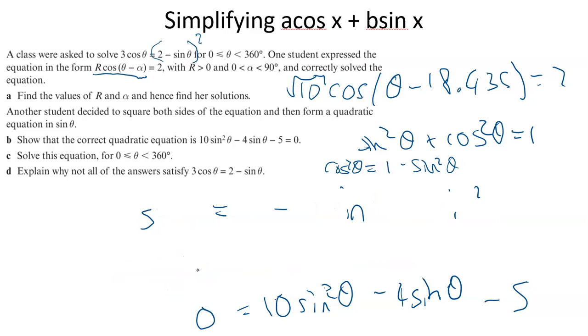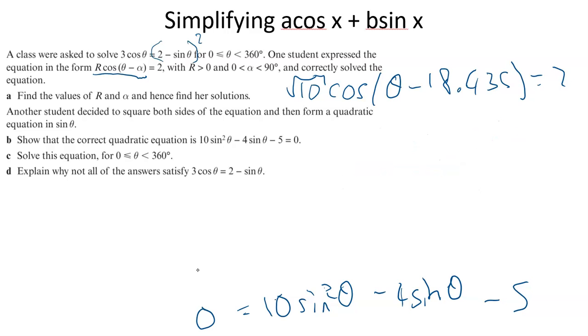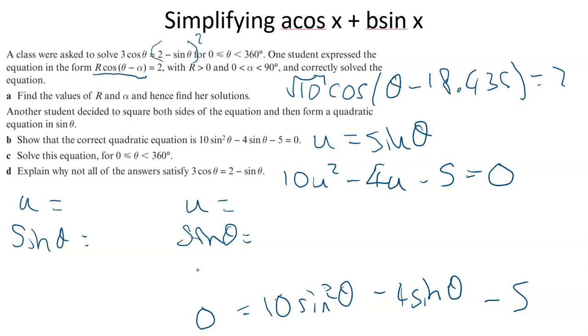Now we can solve this equation. I'll set this up but not do all the number work. Substitute u = sin(θ), then solve 10u² - 4u - 5 = 0. That might factorize or use the quadratic formula to get two values of u. Then sin(θ) equals each value, do inverse sine and use cast diagram. You'll get four answers total for θ - two u values from the quadratic, then two θ values from each using cast.